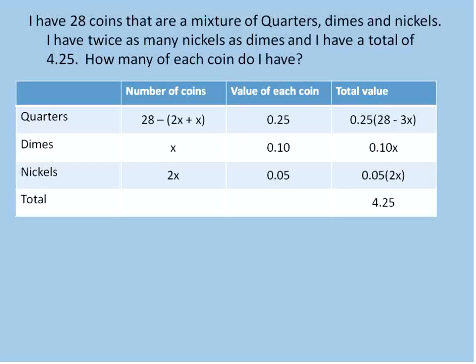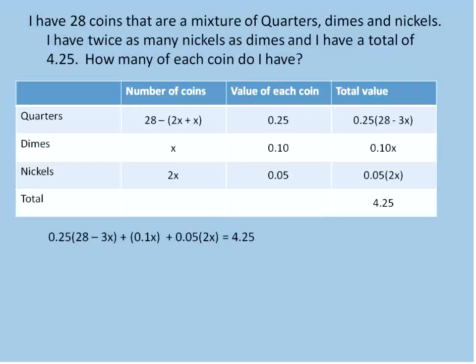When you're set up, this is the first step, getting the table. This is probably the most challenging part. The next part is to set up an equation. My equation is going to look like this: the total value of quarters plus the value of dimes plus the value of nickels equals our total value. In other words, this plus this plus this equals this. So 0.25 times 28 minus 3x, that's how much money I have in quarters, plus 0.1x in dimes, plus 0.05(2x) in nickels, equals my total amount of $4.25.